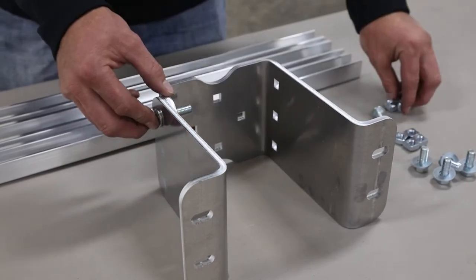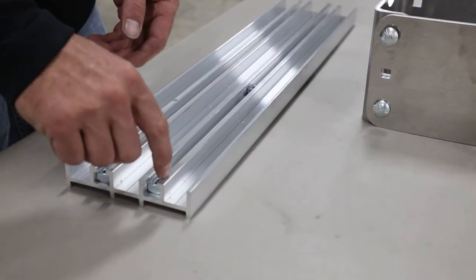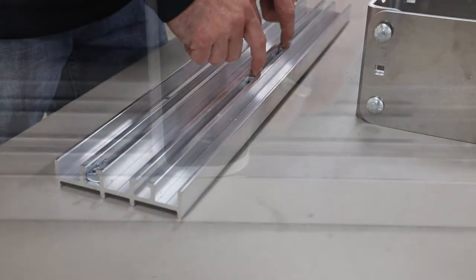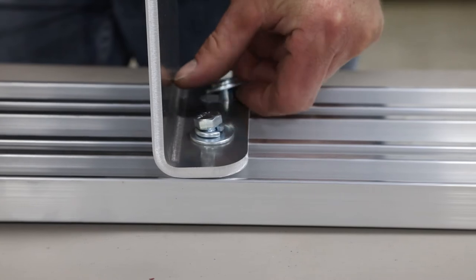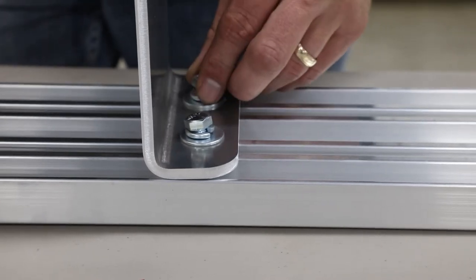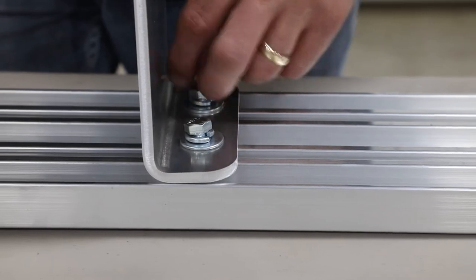Secure both halves of pivot mount with carriage bolts and nuts. Slide square nuts into channels in mounting plate. Secure pivot mount to mounting plate by threading bolts with flat washers and lock washers into square nuts in channel. Center pivot mount on mounting plate and finger tighten all hardware.